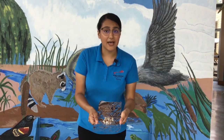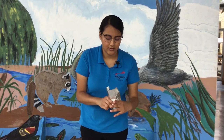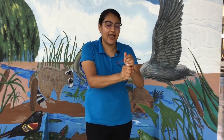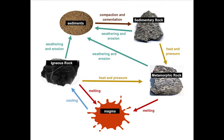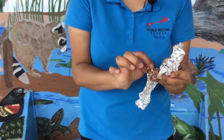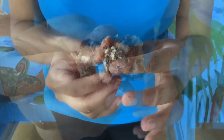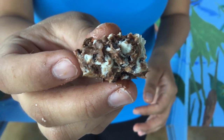The next step is to add pressure to our sediments. We are going to do that by closing our foil and adding pressure to the sediments that are inside. This process is known as compaction, which means that through pressure, our sediments are sticking together to create sedimentary rocks. Now we have our sedimentary rock.